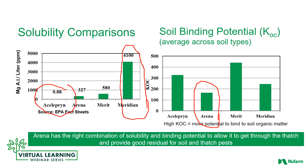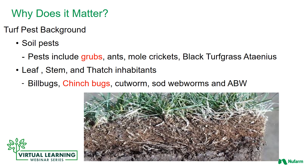If you're familiar with the Goldilocks and the Three Bears story — one porridge too hot, one too cold, and the third just right — we believe the same applies to Arena. We believe Arena has the right combination of solubility and binding potential to allow it to get through the thatch and provide great residual. Why does this matter? We need to remember where pests reside and where they cause damage: soil pests like grubs, and thatch- and stem-dwelling bugs. Understanding solubility and how a product gets held up is essential.